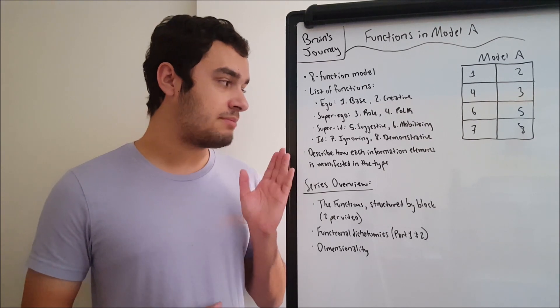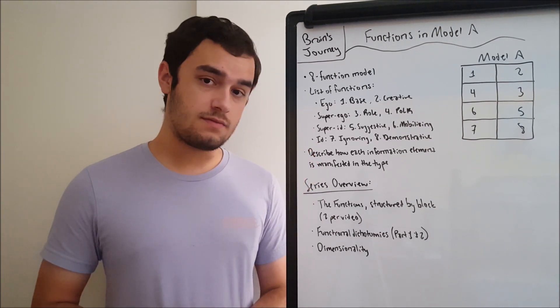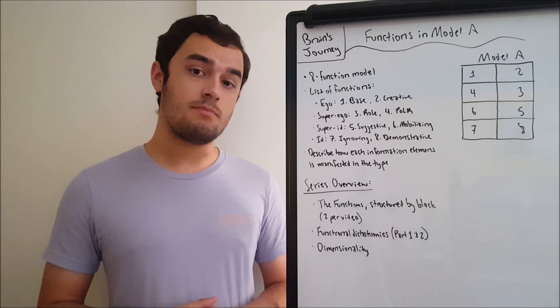Then we have the super id block with function number five, the suggestive function, and function number six, the mobilizing function.